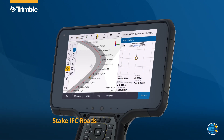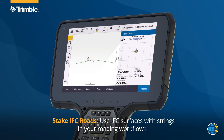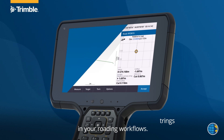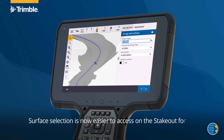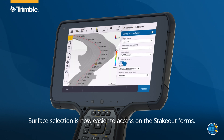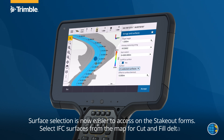Use IFC surfaces with strings in your roading workflows. Surface selection is now easier to access on the stakeout forms. Select IFC surfaces from the map for cut and fill deltas.